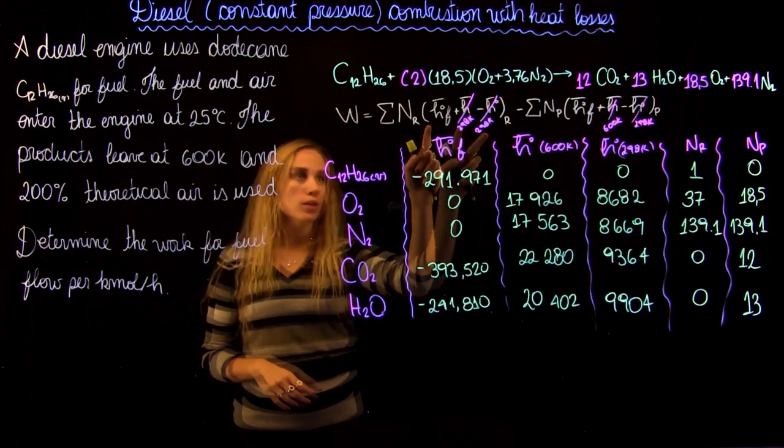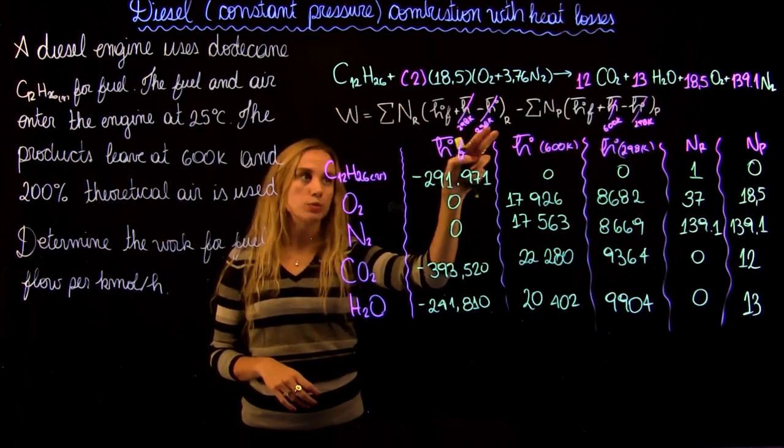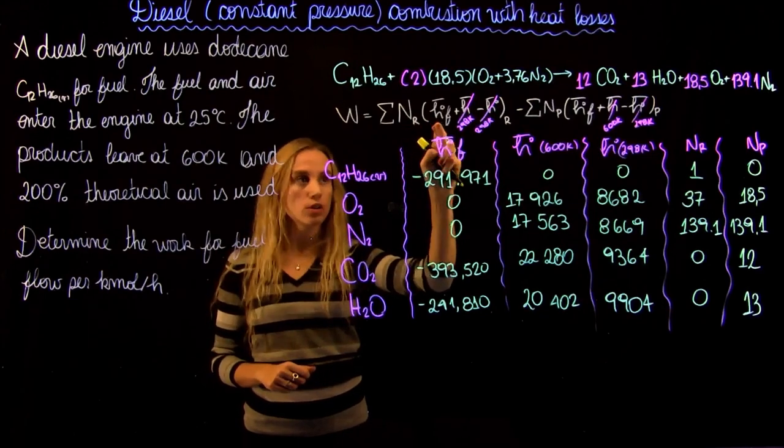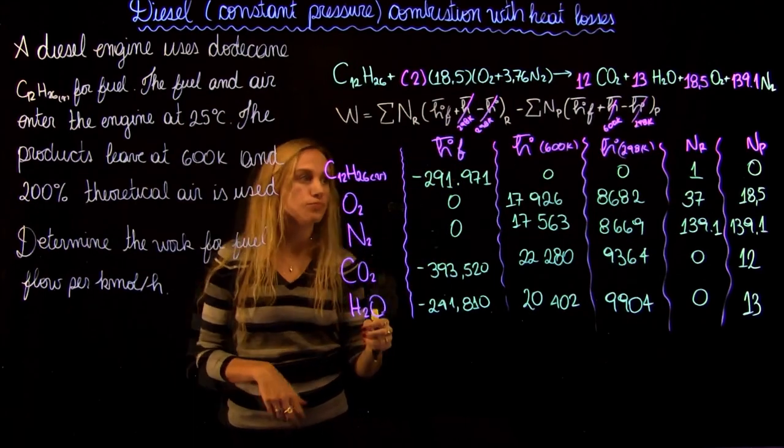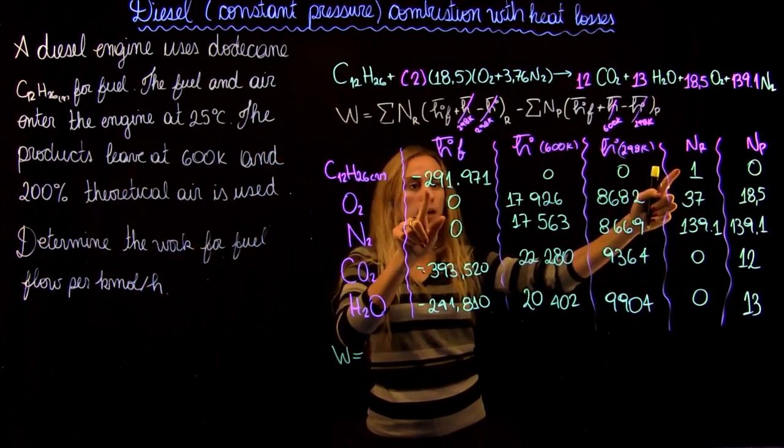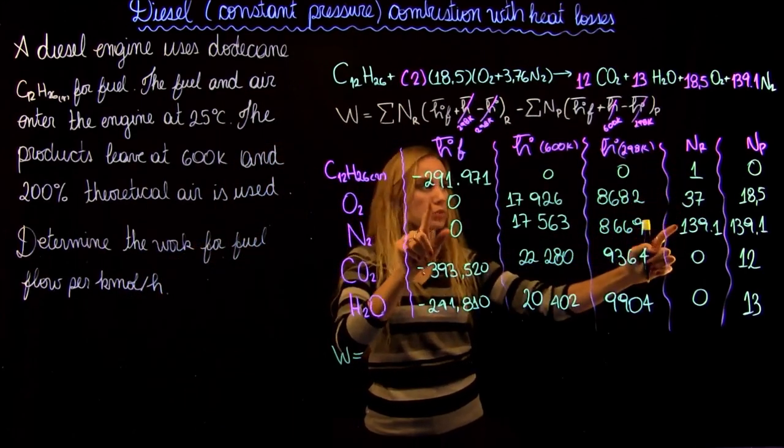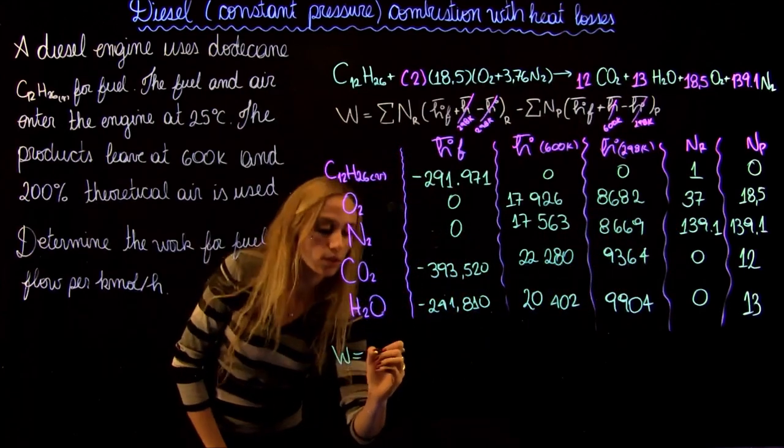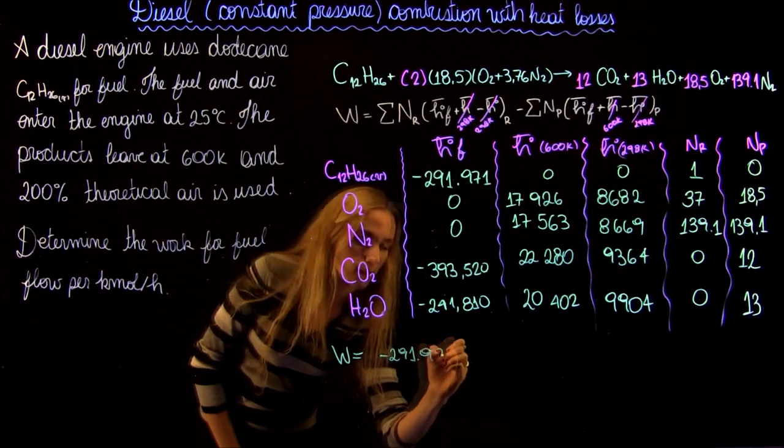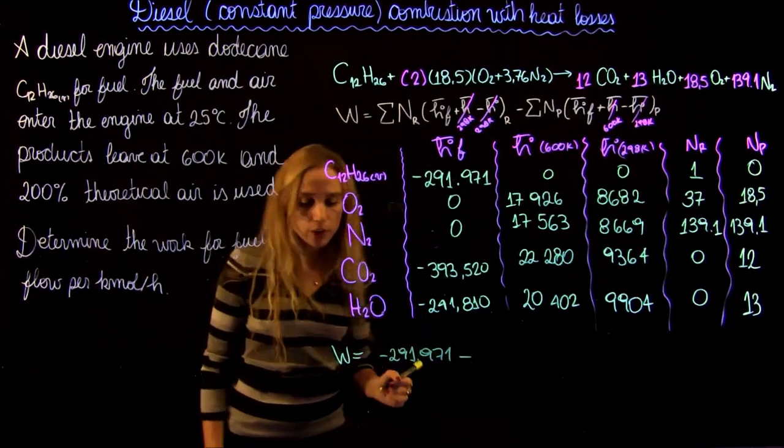So as I said before, the reference and the reaction temperatures are the same, so we're actually only going to look for the formation enthalpy. And therefore the work is going to be 1 times that plus 1 times this is 0 plus 1 times this is 0. So it's going to equal plus 2919971.